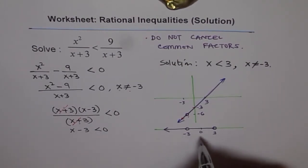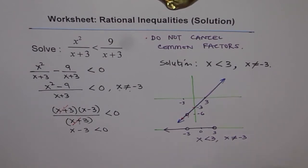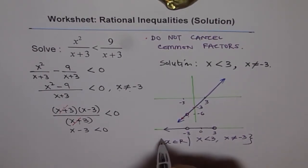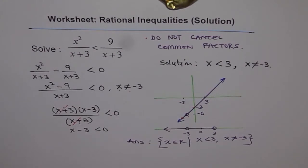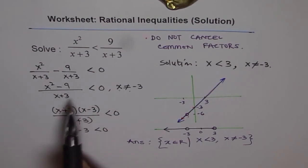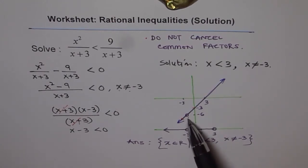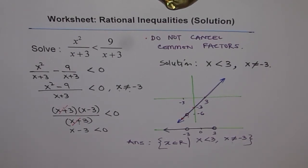In interval form, x is less than 3, but x is not equal to minus 3. In set form, we write x belongs to real numbers such that x is less than 3 and x is not equal to minus 3. To conclude: there are rational functions that reduce to a linear function, but always remember the restrictions. Holes like this must not be included in your solution set — including them would make your solution wrong. We will now move on to other questions where traditional methods of solving rational functions are discussed.